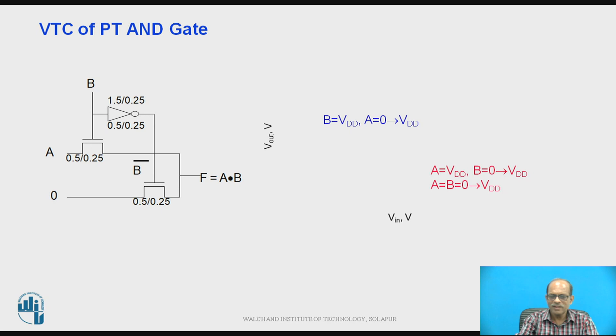Now let us observe and understand the VTC of pass transistor AND gate. So this is a pass transistor AND gate and for this the sizes are 0.5 by 0.25 micron for NMOS and here for this inverter for the PMOS 1.5 by 0.25, this is NMOS 0.5 by 0.25 micron and this is the VTC of this pass transistor AND gate.